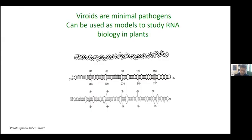The type species of viroid, PSTVd, is a rod-shaped molecule. As I said, it is a closed circular molecule — this one is 359 nucleotides — and the anticipated tertiary structure is a little bit like that. We don't really know this. And it does all this infectivity with just this little structure. It reminds us of viruses, which is why they're called that. Otherwise they're very dissimilar. It does everything a virus does, all these phenotypes, just by the secondary and tertiary structure of this little sequence.